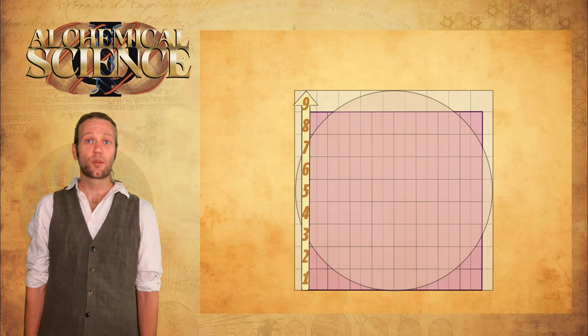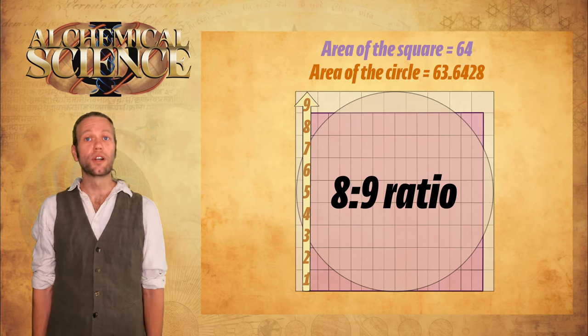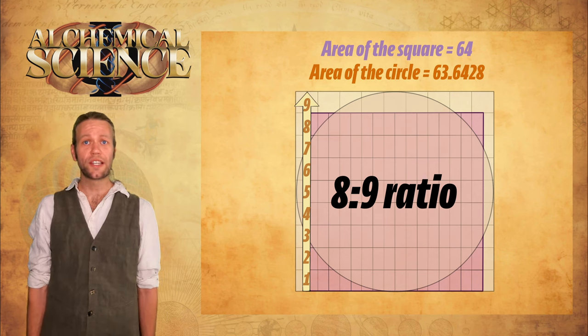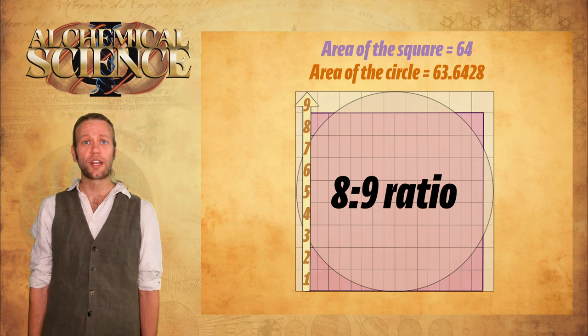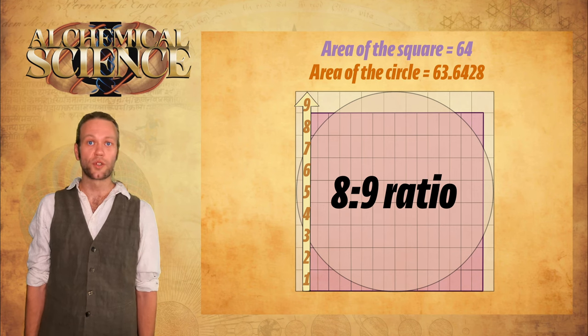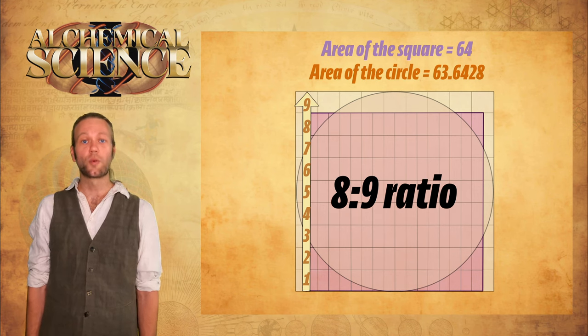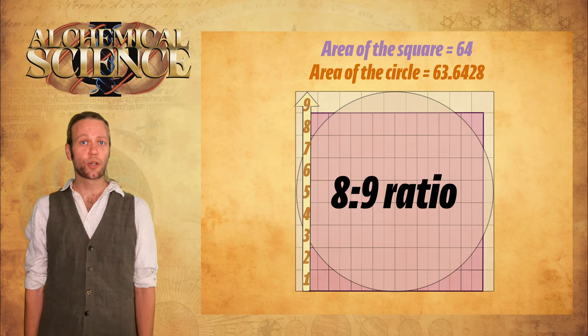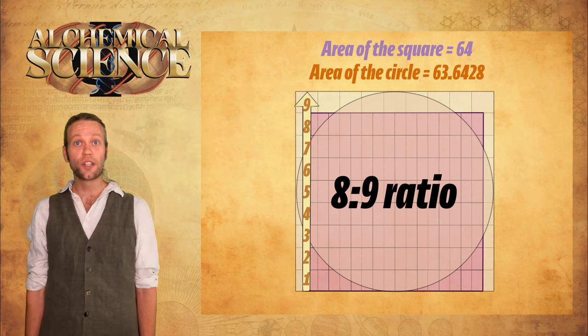The 8 by 8 square consists of 64 unit divisions, the area of 64. The circle encased by the 9 by 9 square has an area of 63.6428 units of the same size, based on pi 3.142587, or 22 over 7. The 8 to 9 ratio between the circle and the square shows us their harmonious relationship.